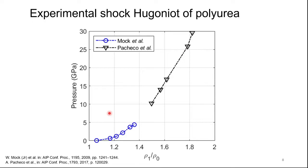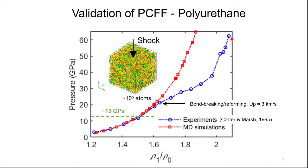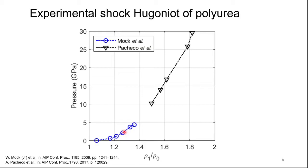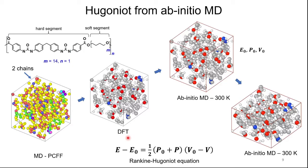Then we wanted to do the same validation for the polyurea samples. But in the case of polyurea there are limited experimental data. So what we did was perform DFT calculations — specifically first-principles molecular dynamics simulations — to compute the shock Hugoniot for polyurea. This is the polymer chain we used, and this is the sample. We first equilibrated the sample in MD and then brought it into DFT, where we equilibrated the system at 300 Kelvin. This was our reference configuration, and then we compressed the sample up to the desired level of compression.